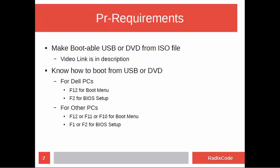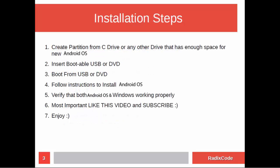So let's see what we are going to do. First of all, we will create an empty partition for Android OS from our C drive or any other drive that has enough space. After this, we will insert our USB drive which has Android OS, and then we will boot our computer from USB and install Android OS. After this we will verify that our Android OS is working on our computer. I actually made an article for this video, so if you guys are facing any problem, please check out the article version of this video as well.